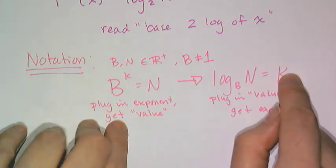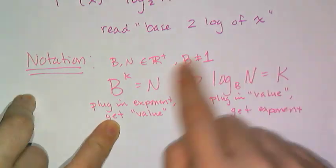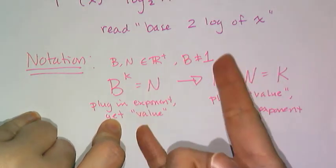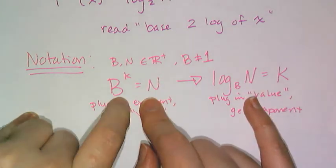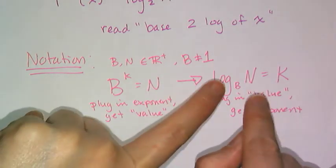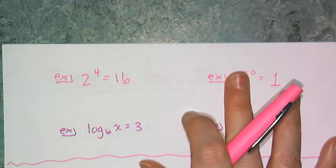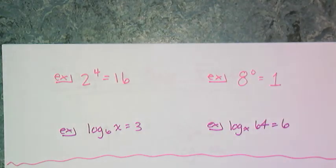One of the first things that I need to make sure that you can do is switch between these notations, because they're really the same thing, just writing it in a different way. This is writing it as an exponent, this is writing it as a logarithm. So let's convert these to the opposite notation.